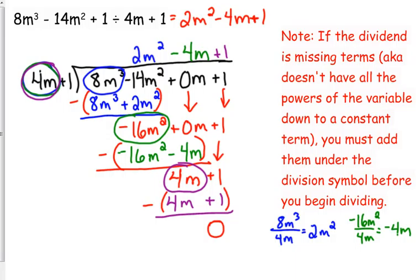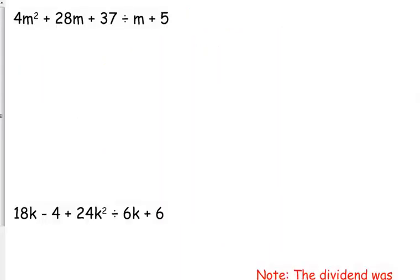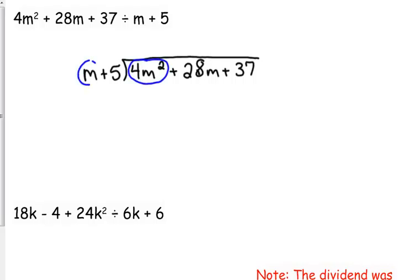I think I have two more examples I want to do with you guys. 4m squared plus 28m plus 37 divided by m plus 5. So, I would probably go ahead and just skip to setting it up. Don't worry about writing it the way that I have it written first. Set up the division. First things first. Divide 4m squared by m. That gives us 4m. Make sure you line it up.